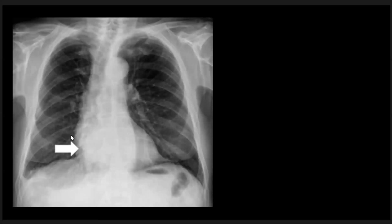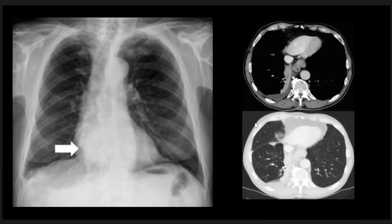Here is another patient with a right retrocardiac mass lesion. The CT scan shows collapse or atelectasis of the medial basal segment of the right lower lobe with some pleural effusion. The bronchoscopy was negative for mass lesion and it was due to a mucus plug.